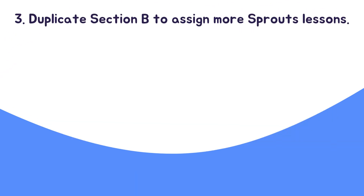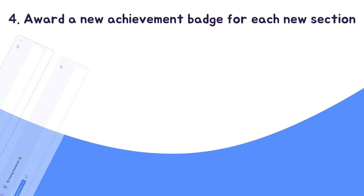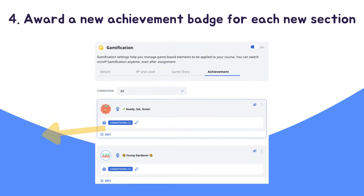Teachers can add on to the Sprouts course by duplicating Section B and create opportunities for parent-child conversation on values throughout the year. Teachers can award a new achievement badge under gamification for each new section.